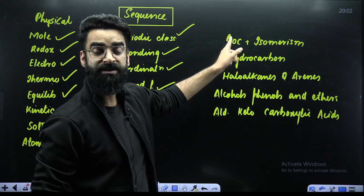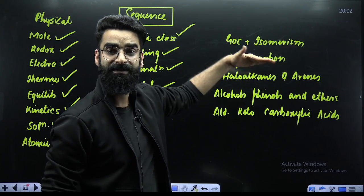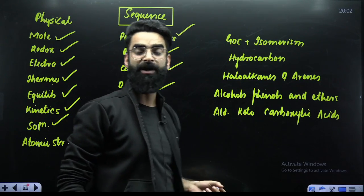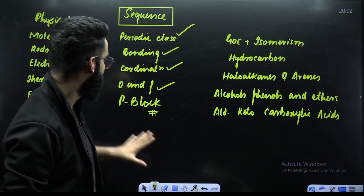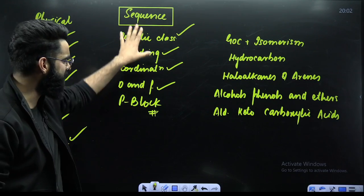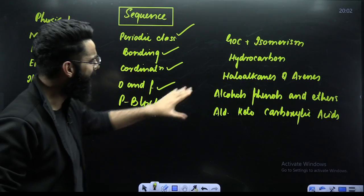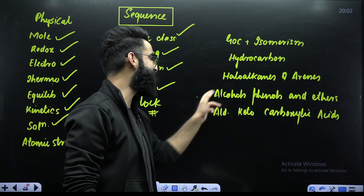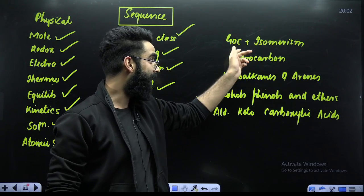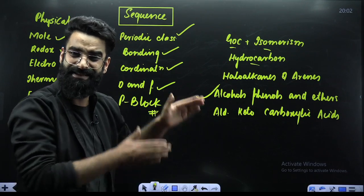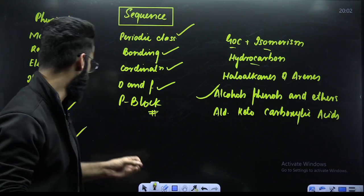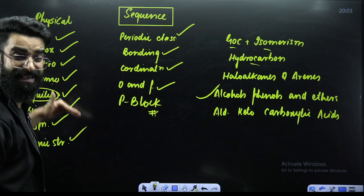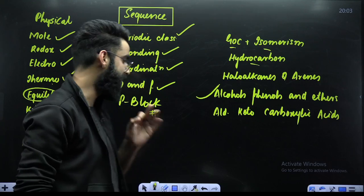When you talk about Organic Chemistry: first, GOC, followed by Isomerism. Then comes Hydrocarbon. After Hydrocarbon, Haloalkanes and Haloarenes. Then Alcohols, Phenols, and Ethers. And at the end, Aldehydes, Ketones, and Carboxylic Acids. You cannot directly start Alcohols, Phenols, and Ethers without doing GOC, Isomerism, and Hydrocarbon first. Similarly, you cannot start Equilibrium without covering the earlier chapters. Try to follow the same sequence if you want your concepts to be super strong.